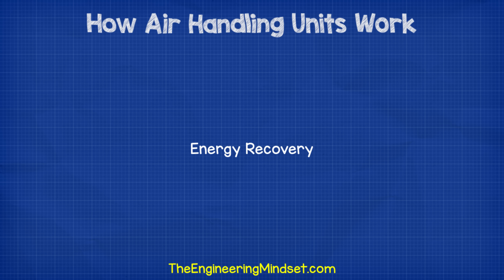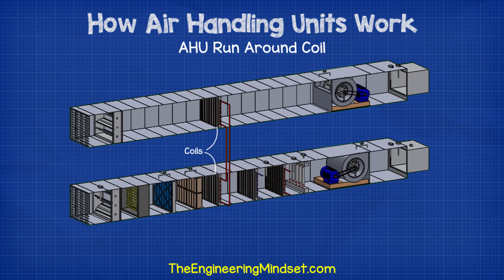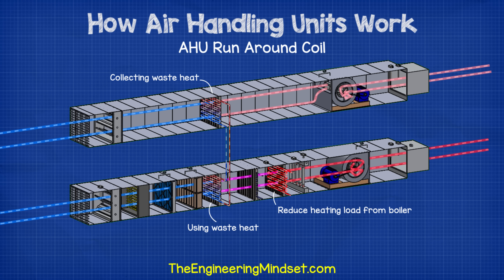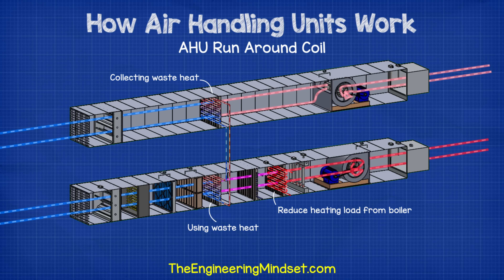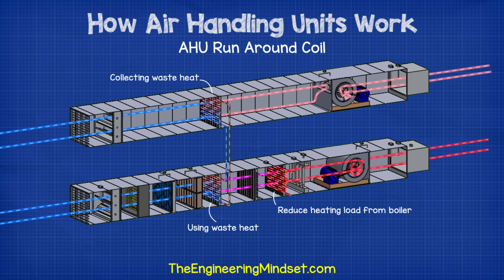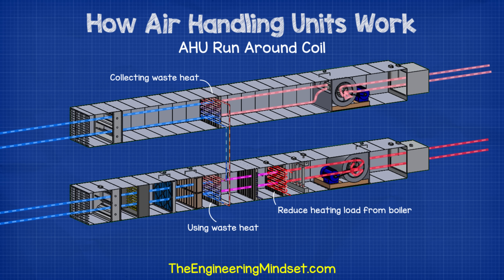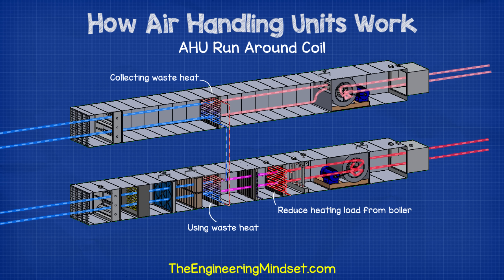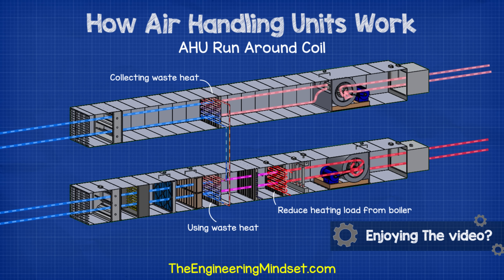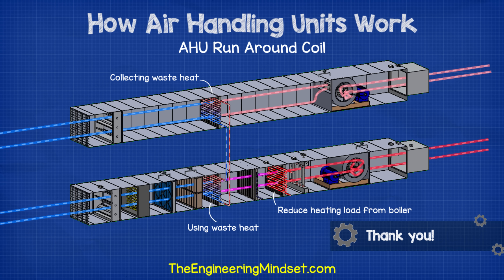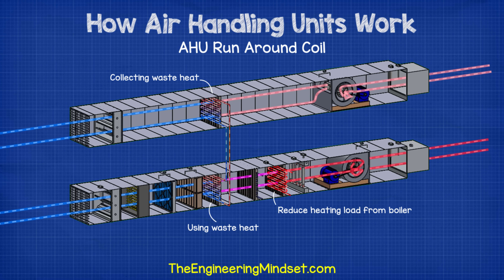Energy recovery. If the supply and extract AHUs are located in different areas, a common way to recover some of the thermal energy is to use a runaround coil. This uses a coil in both AHUs, and a pump circulates water between the two. This will pick up waste heat from the extract AHU and add it to the supply AHU, reducing the heating demand on the heating coil when the outside air temperature is below the supply set point and the return air temperature is higher. The heat would otherwise be wasted as it is simply rejected to atmosphere. As the pump consumes electricity, it is only cost effective to turn on if the energy saved is more than the pump will consume.